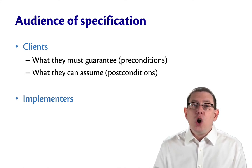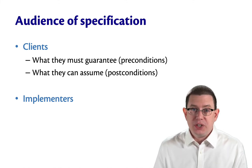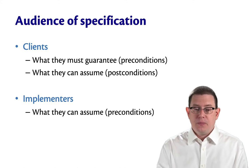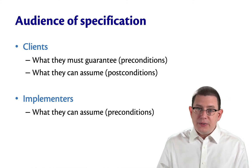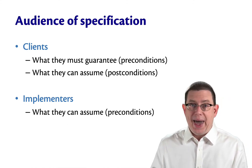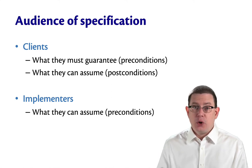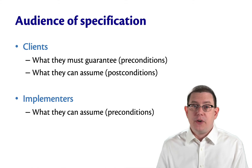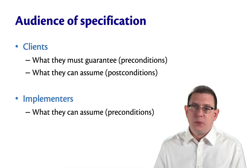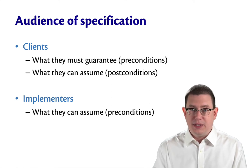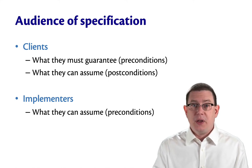They get to know what the output of the function is according to whatever the documentation tells them. For implementers, it's a bit opposite. The specification tells an implementer what they can assume as a precondition, because the client had to satisfy that. So at that function boundary, whoever's implementing the function gets to say, I am assured that precondition holds because the client would never get to call me if it didn't. They might, of course, but that's not the implementer's fault.